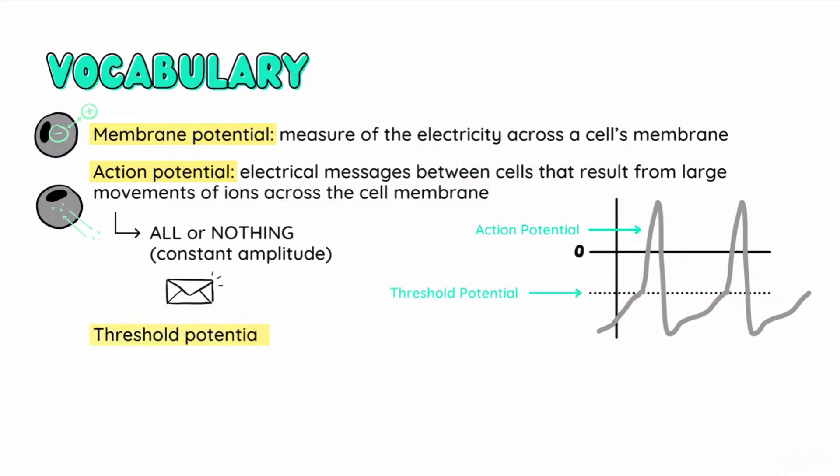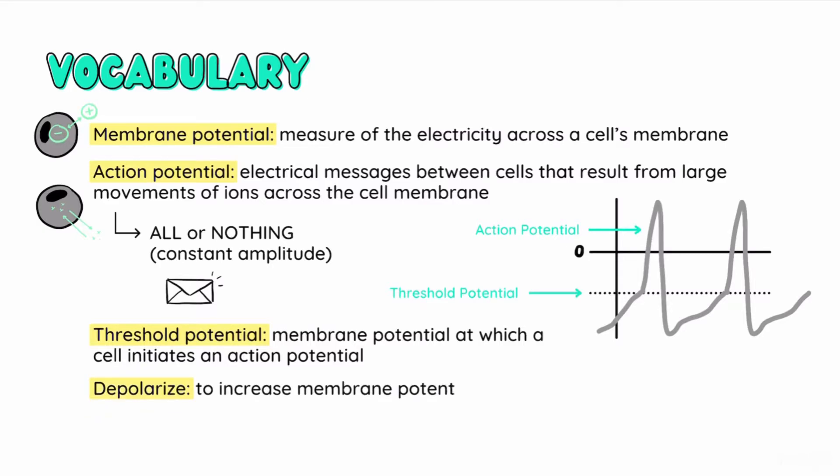Threshold potential refers to the membrane potential at which an action potential is initiated, which represents that all or nothing point. To depolarize means to increase the membrane potential. To hyperpolarize or repolarize means to decrease the membrane potential. Generally, a cell becomes more active as it depolarizes and more inhibited as it hyperpolarizes.